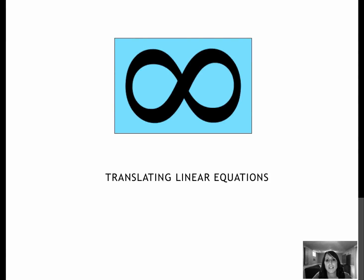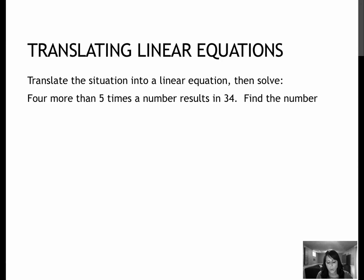For this lesson, we will continue to translate linear equations, and we just won't use the flowchart, but essentially we're using the same steps. So for my first example, I have four more than five times a number results in 34. Remember, we read the question first.